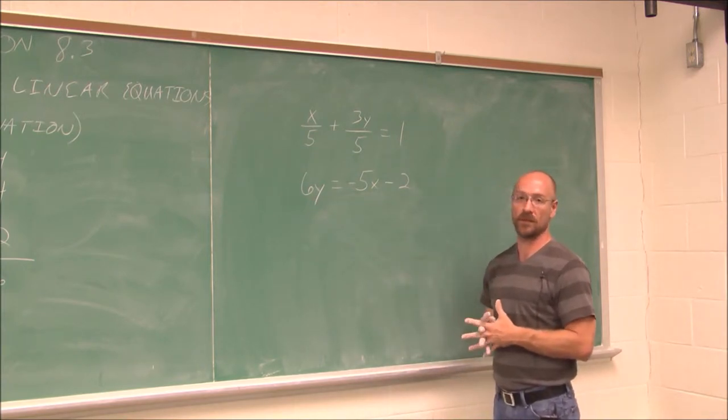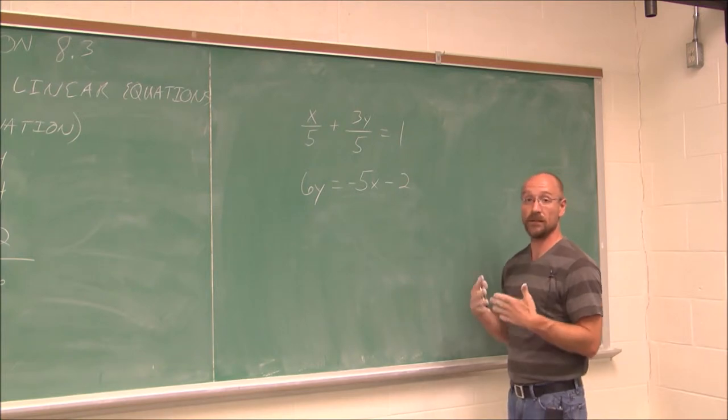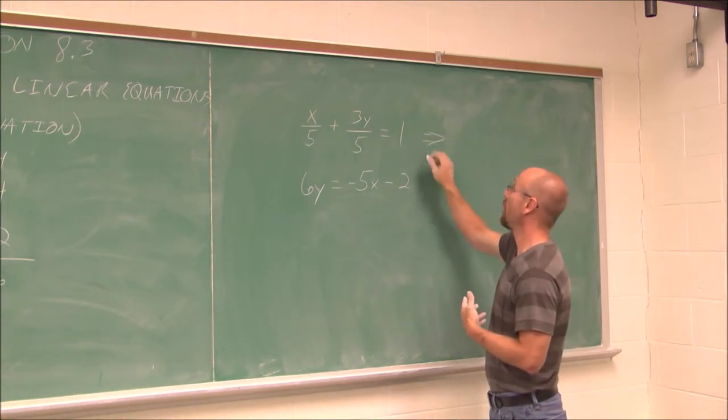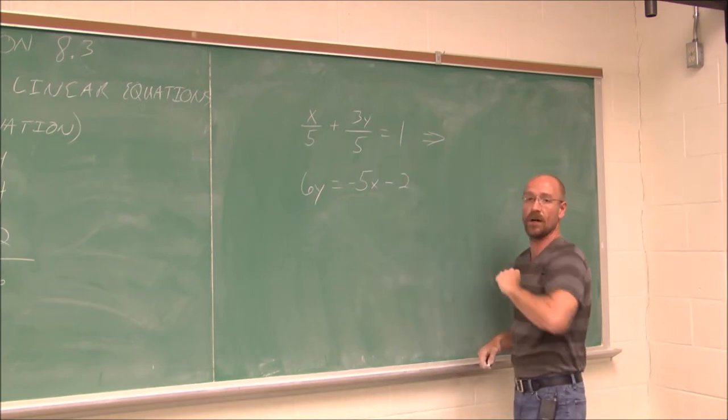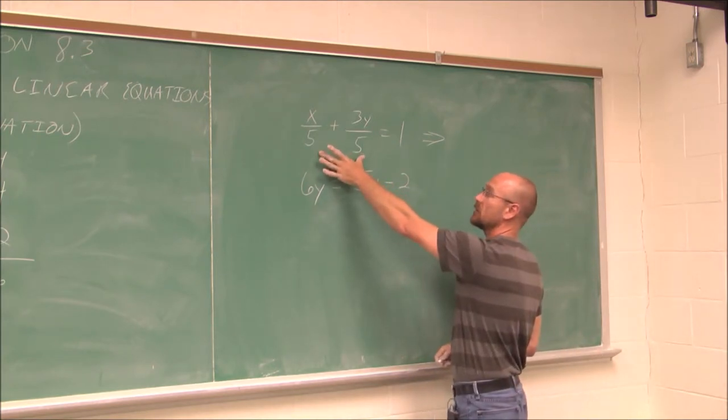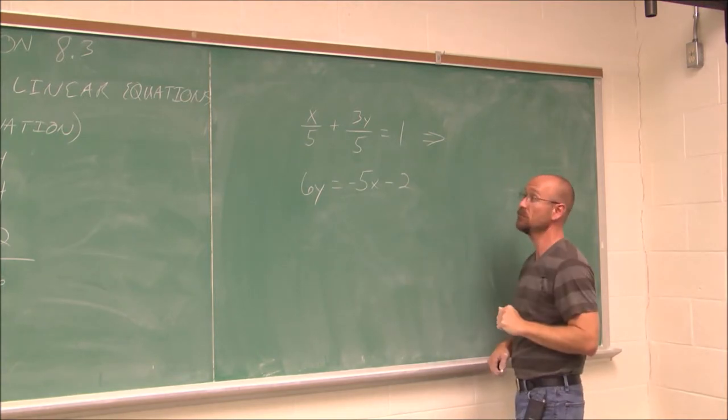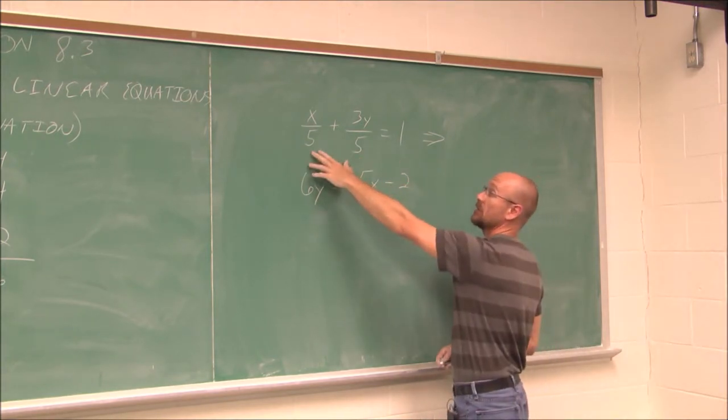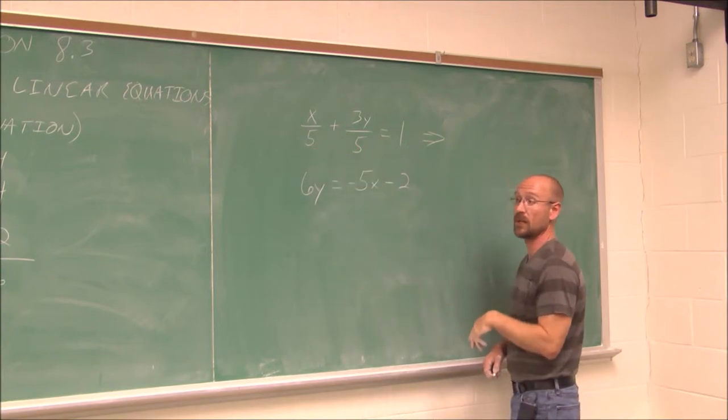This one is not in any particular form, but it's almost in slope-intercept. But we want them to be the same. And we know we can apply rules of equality. We've been doing that throughout all of these videos. So you know what? I don't want to work with fractions. So I'm going to eliminate this fraction because it is an equation. So I can multiply through by the least common denominator. Well, in this case, it's 5. There's only one denominator.